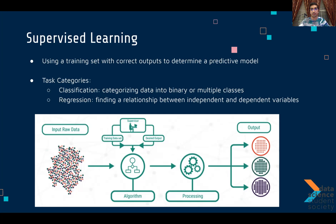Regression aims to find a relationship between explanatory and dependent variables. An example would be predicting house price based on number of bedrooms — we'd expect price to increase with more bedrooms. We can draw a regression model based on that. This is just a brief overview; we'll go deeper into these models as well.